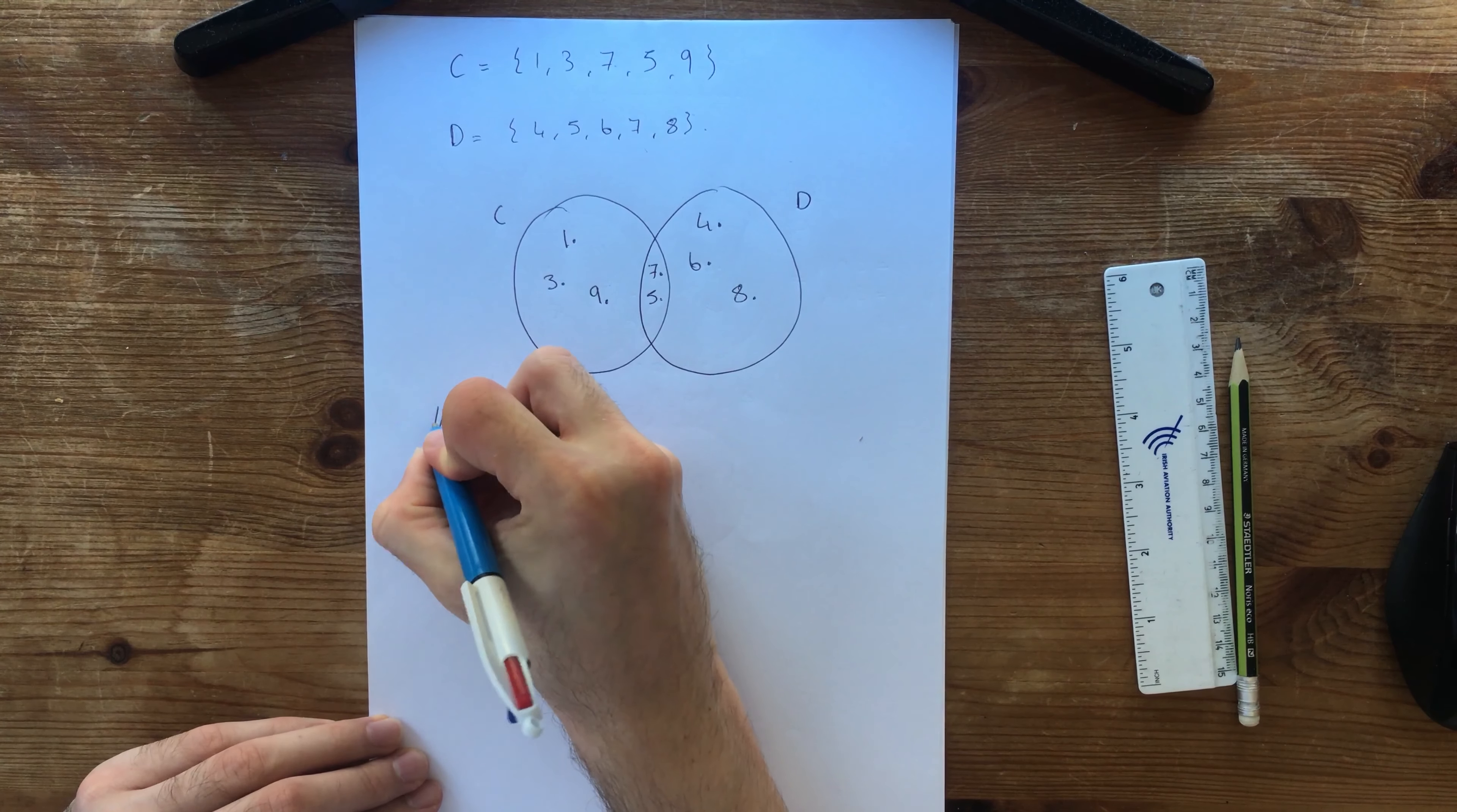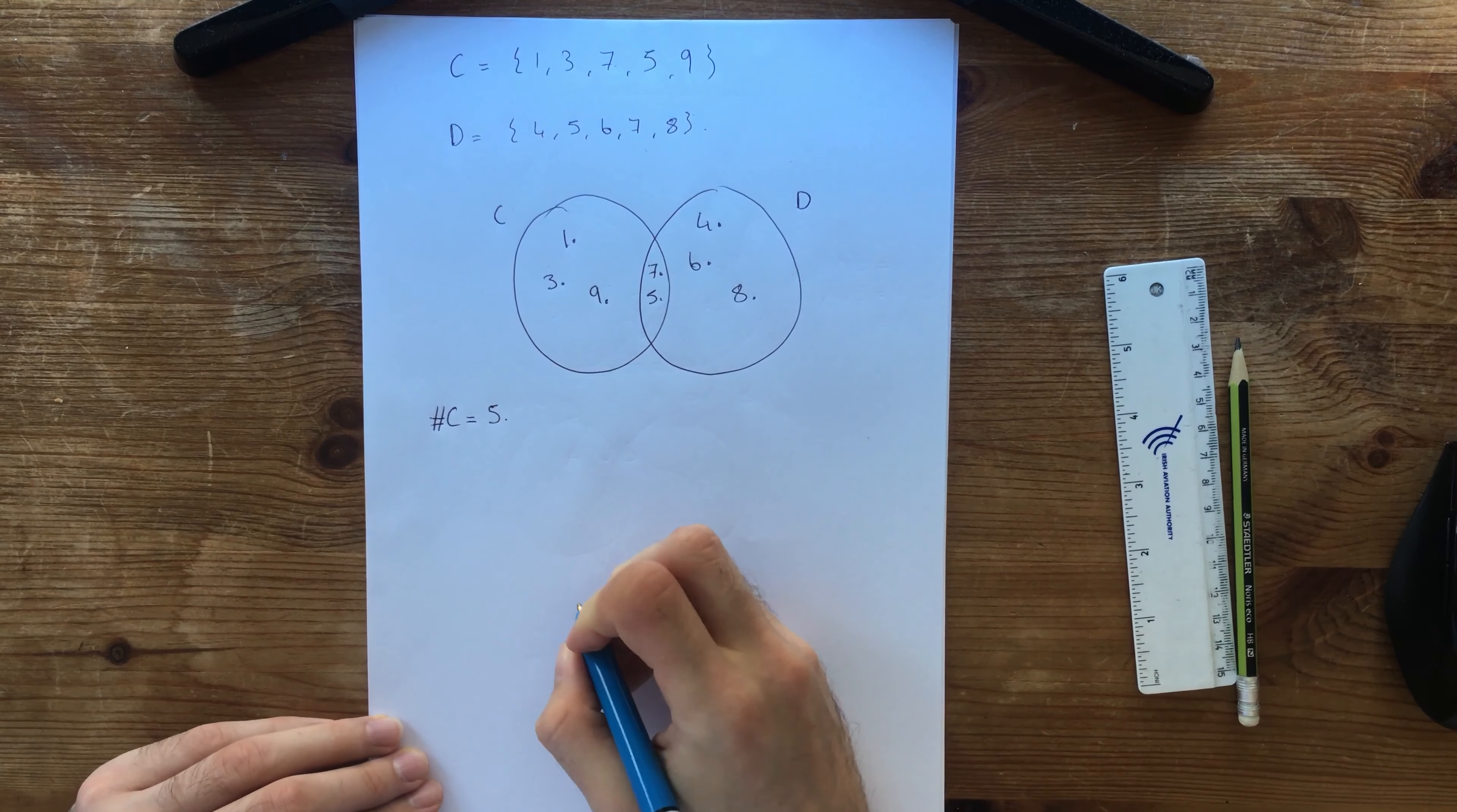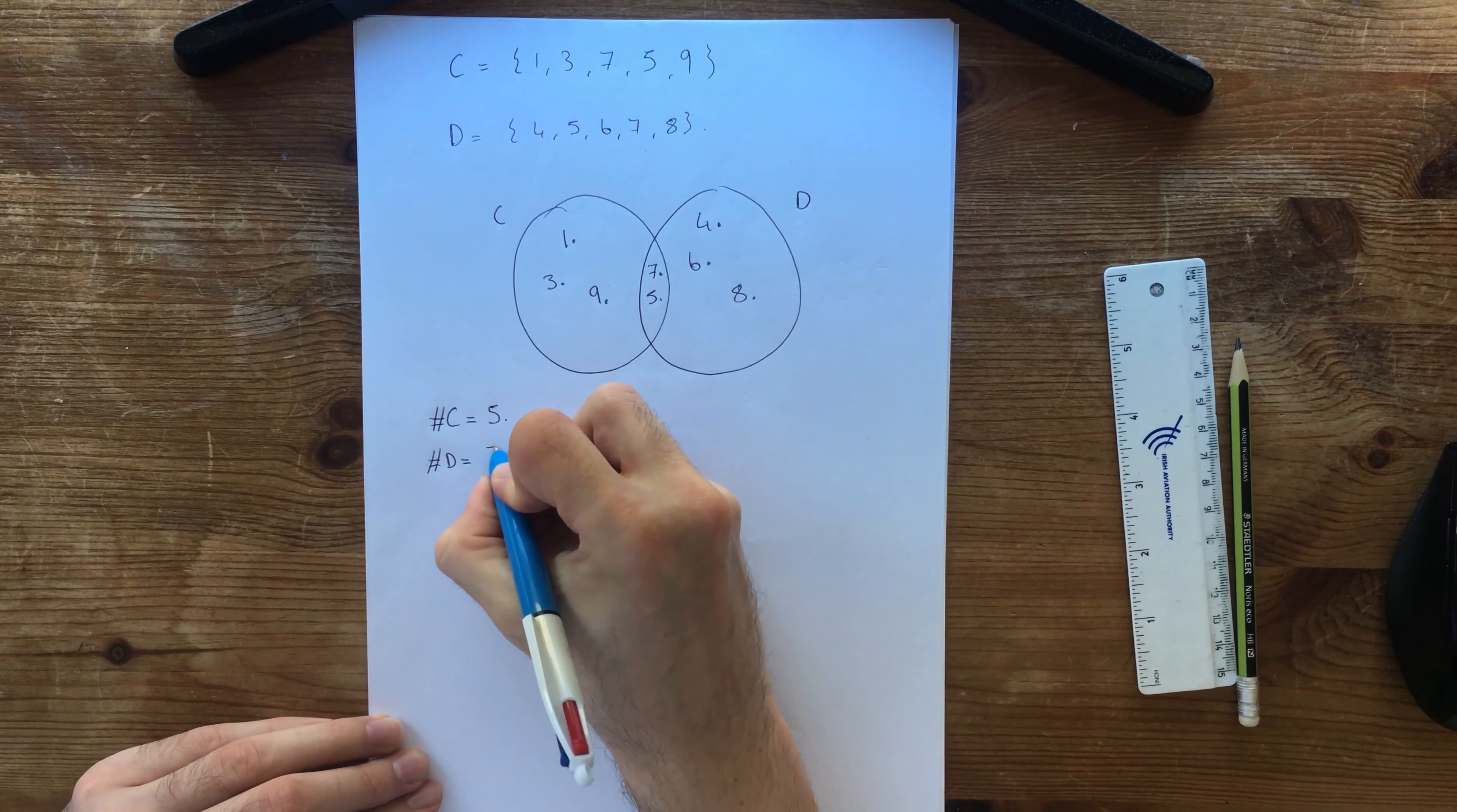I want to know what the cardinal number of C is. So the cardinal number of C is 1, 2, 3, 4, 5. That's 5. What's the cardinal number of D? It is 1, 2, 3, 4, 5. Okay.